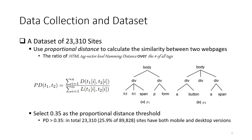From all successfully visited websites, we selected those that have both mobile version and desktop version webpages, since our goal is to explore tracking differences between them. To do this, we used proportional distance, which calculates the similarity between two webpages of a website. It is the ratio of the HTML tag vector-level Hamming distance over the total number of HTML tags appearing in the DOM. For example, when visiting a website that returns webpage P1 to our mobile device and P2 to our desktop device, we calculate the distance between those two DOM traces.